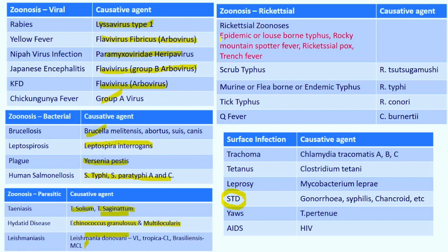Rickettsial zoonoses: epidemic or louse-borne typhus, Rocky Mountain spotted fever, rickettsial pox and trench fever. In the scrub typhus group: scrub typhus caused by Rickettsia tsutsugamushi; murine or flea-borne endemic typhus by Rickettsia typhi; tick typhus by Rickettsia conorii; Q fever by Coxiella burnetii. Trachoma by Chlamydia trachomatis A, B, C. Tetanus by Clostridium tetani. Leprosy by Mycobacterium leprae. STDs include gonorrhea, syphilis, chancroid, etc. — grouped under virus, bacteria, fungi. Yaws by Treponema pertenue. AIDS by human immunodeficiency virus.